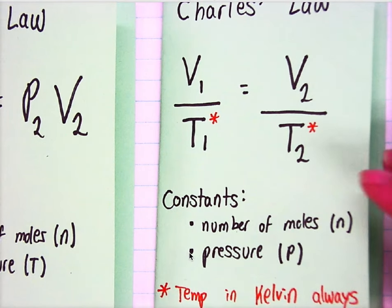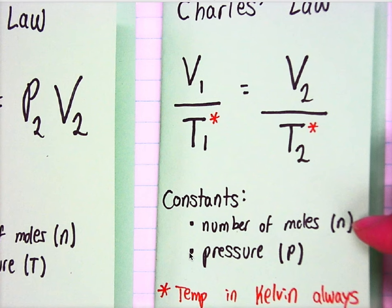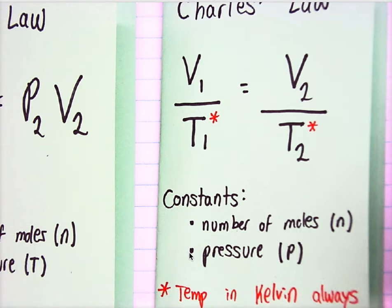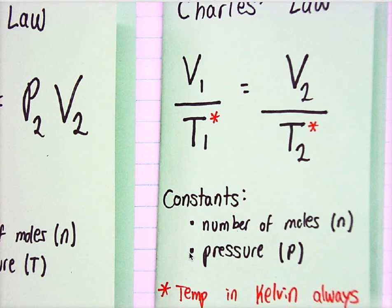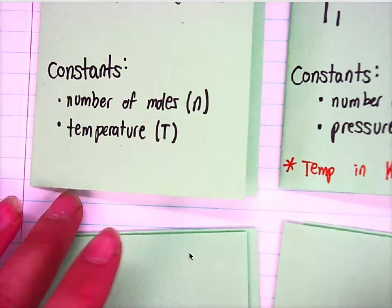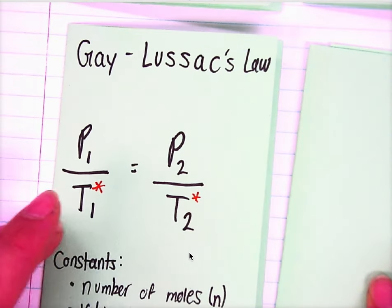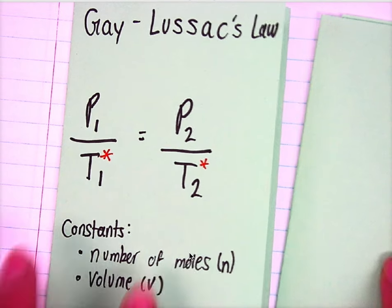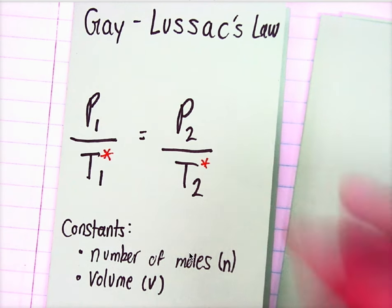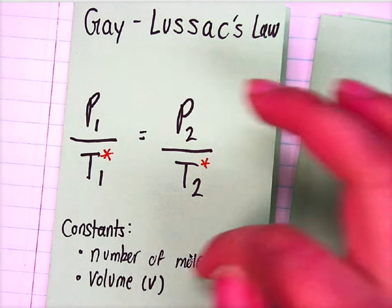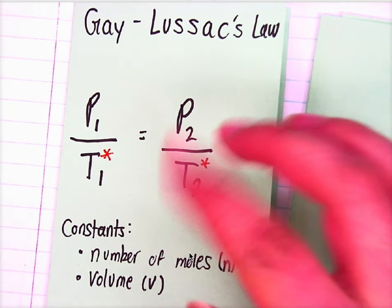After that, we have Charles' Law, where it's V1 over T1 equals V2 over T2. The constants are again the number of moles and the pressure. I have these stars by the temperature — I want you to write a little reminder to yourself that when we're doing the gas laws, temperature is always going to be in Kelvin. After Charles's, we're going to talk about Gay-Lussac's Law, which relates pressure and temperature: P1 over T1 equals P2 divided by T2. Again, the temperatures have those little stars, and the number of moles N and volume are our constants.